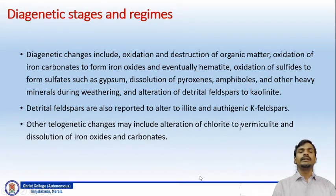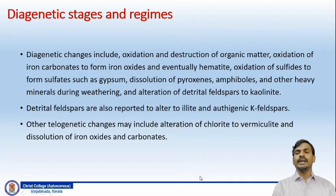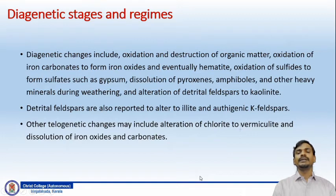Diagenetic changes in the telogenetic stage include oxidation and destruction of organic matter, oxidation of iron carbonates to form iron oxides and eventually hematite. All minerals formed under reducing conditions are being oxidized. Oxidation of sulfides forms sulfates such as gypsum. Dissolution of pyroxenes, amphiboles and other heavy minerals during weathering, and alteration of detrital feldspar to kaolinite also happen in this telogenetic stage.